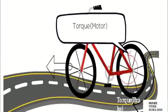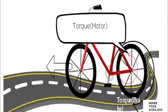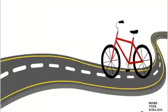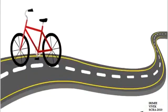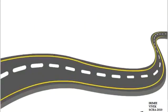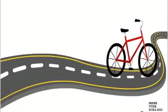Wheel slips when the force applied to the wheel, or the torque produced by the engine — in this case the rider — exceeds the traction available to the wheel with the surface on which it is running.